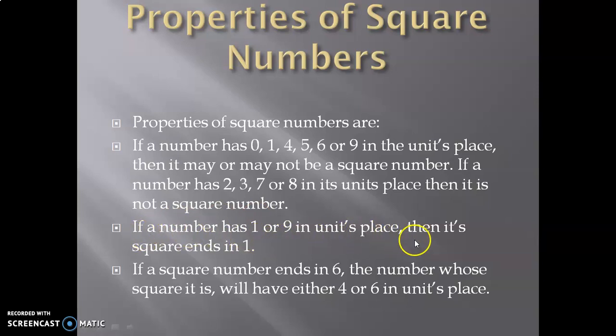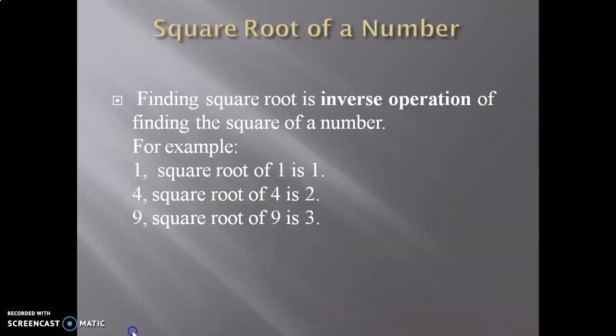If a number has 1 or 9 in unit's place, then its square ends in 1. If a square number ends in 6, the number whose square it is will have either 4 or 6 in unit's place.